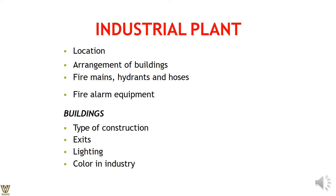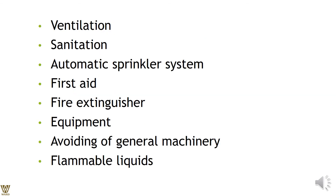Fire deterrent activities include fire hydrants and water hoses. Buildings must have appropriate construction materials, fire exits, evacuation plans, and emergency lighting. Adequate ventilation, sanitation, automatic fire prevention mechanisms, and sprinkler systems are essential. First aid must be available. Fire extinguishers must be present, and their usage must be communicated to all employees. Flammable liquids and equipment must be isolated where possible.